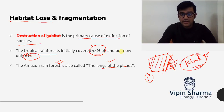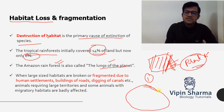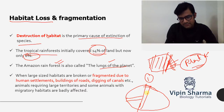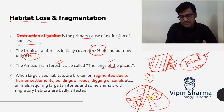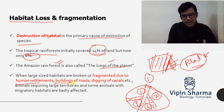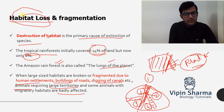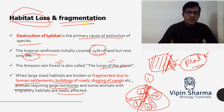Now, fragmentation — imagine a large area that a species needs to live in. We first construct a road through it, dividing it into two parts. Then we add a canal, making a third part. Then we put up buildings and human settlements, making a fourth part. Such a large area, which a species required, is broken into four or five parts due to human settlement and construction. Animals that needed larger territories are badly affected — they used to move freely, but now their survival is hampered.